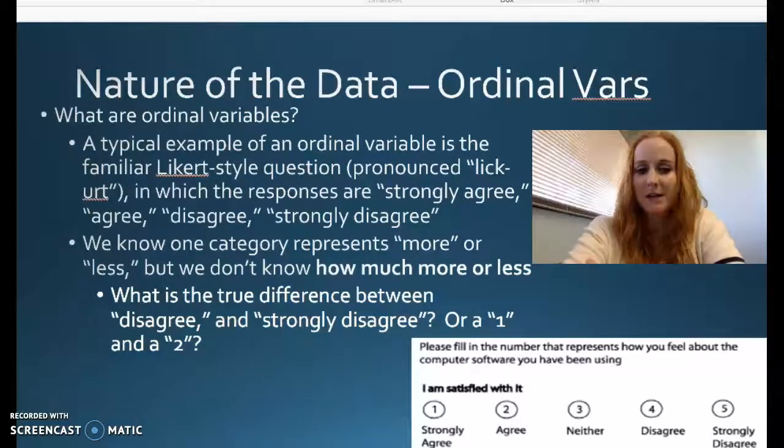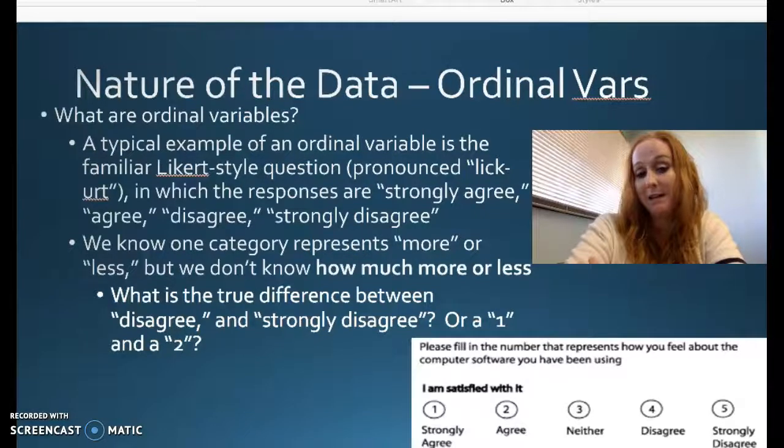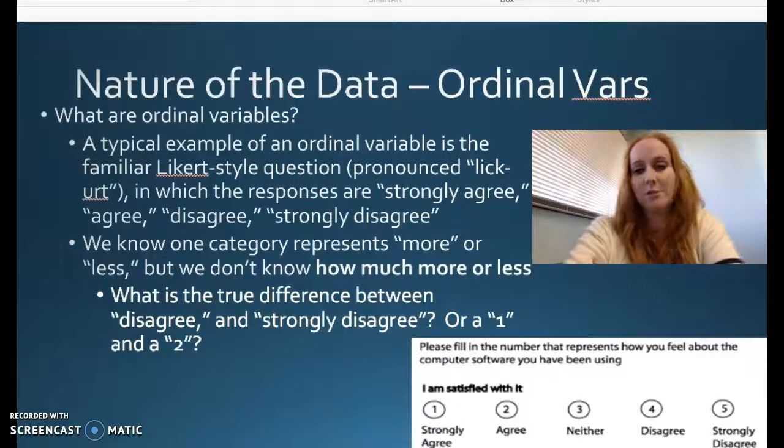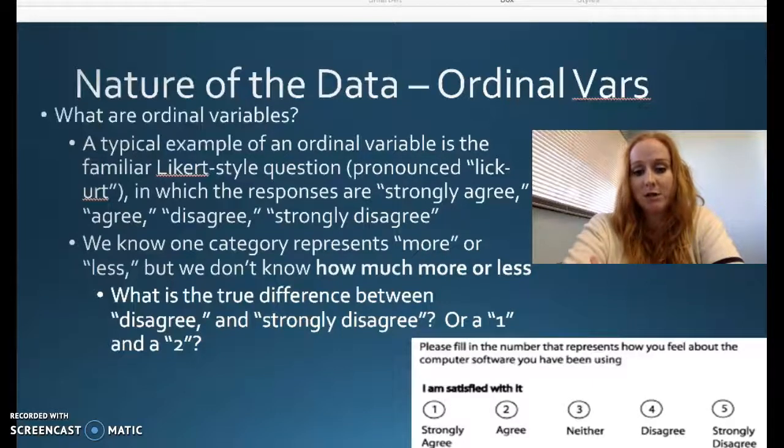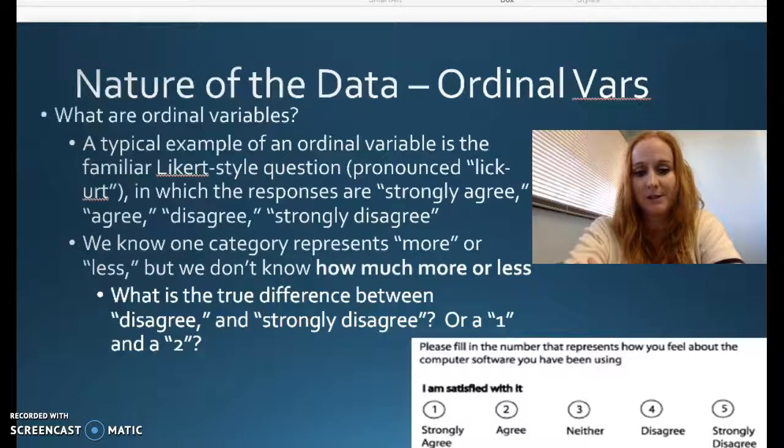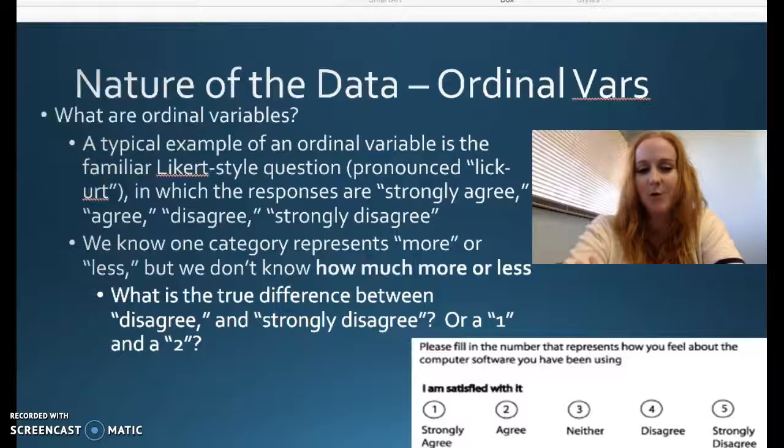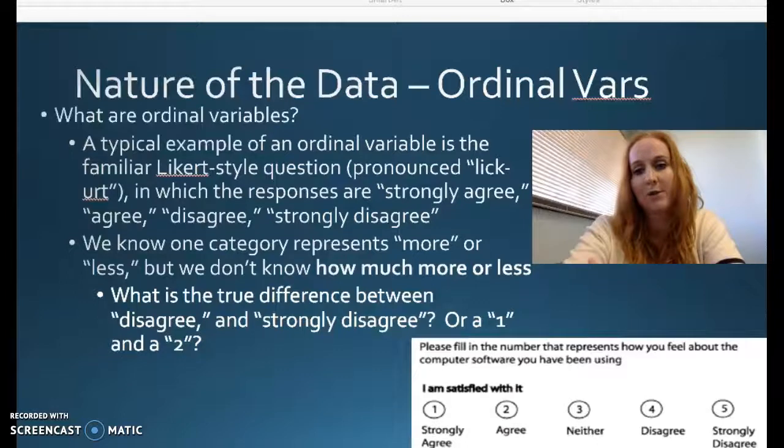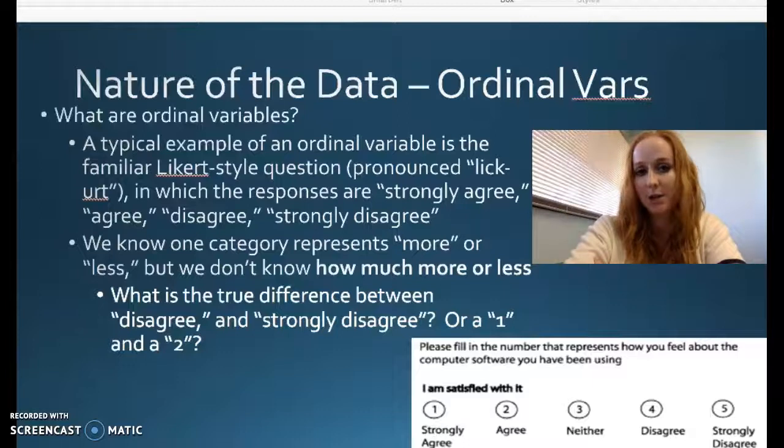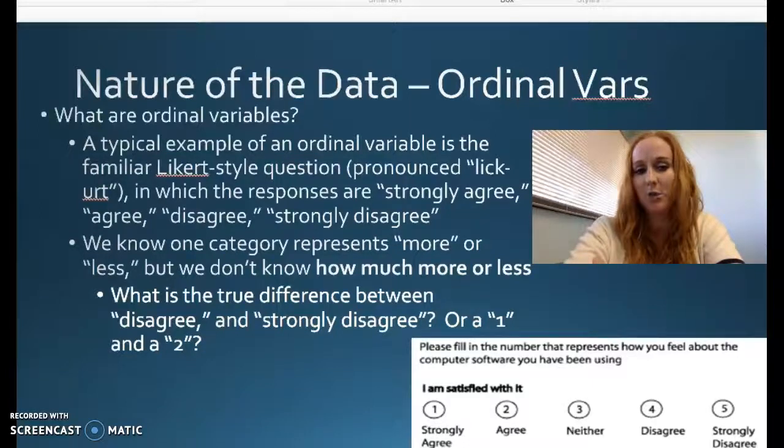We call it Likert. We know there's more or less agreement with something in a question like this, but we don't know exactly the true difference or how much. So what's the actual difference between someone that says strongly disagree and someone that just says disagree? Even though there are numbers assigned, what's the actual difference between a one and a two or a four and a five? What's going to tip you over from agreement to strong disagreement? We just know there's more disagreement or less agreement, but we don't know exactly how much. We can't quantify it.